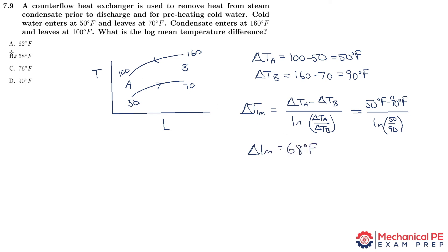The best answer choice is B. If you're not confident about the negative numbers, try it the other way: define this side as 'a' and this side as 'b', do 90 minus 50 which is positive, then natural log of 90 over 50 which is also positive. I invite you to try that and prove to yourself that the log mean temperature difference comes out not only positive, but exactly the same — still 68 degrees.